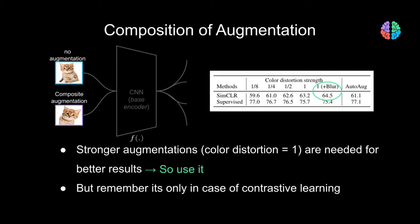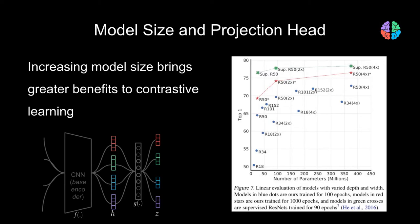Now, recollect that we use a base encoder f(x) in our SimCLR architecture. But what is the best width of this encoder network? They experiment with ResNet-50 with three different widths. While it is not surprising that accuracy increases with increasing width, what is really surprising is that there is a significant gain in accuracy with increasing network width when doing contrastive learning compared to supervised learning.